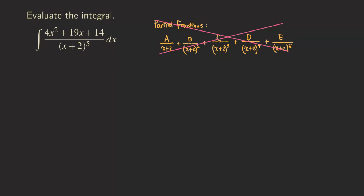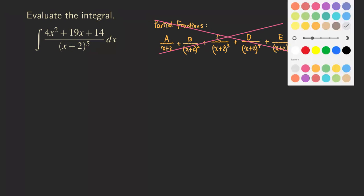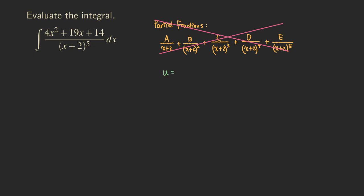There is actually an easy way to do this problem, which is really just a simple u-substitution. You may ask, how do we do the u-sub? Remember, this can still be written as a product — all the stuff on top times 1 over (x+2) to the fifth power. So (x+2) can actually be considered as a linear inner function. In that case, we can just let u be that linear inner function, x+2.